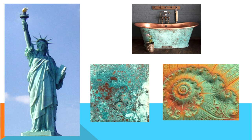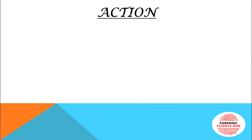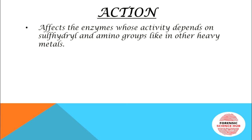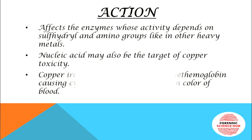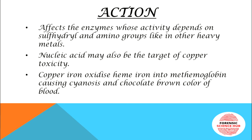If verdigris enters the body, it causes poisoning. Regarding the action of copper: it affects enzymes whose activity depends on sulfhydryl groups and amino groups, similar to arsenic, mercury, and lead. Copper also targets nucleic acids. Copper oxide oxidizes heme iron into methemoglobin, which causes cyanosis and a chocolate brown color of the blood.